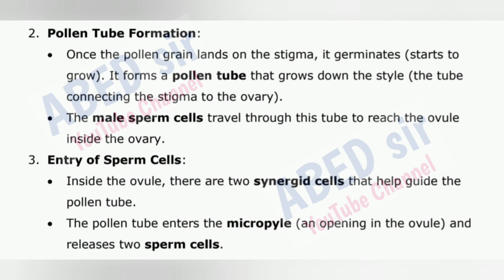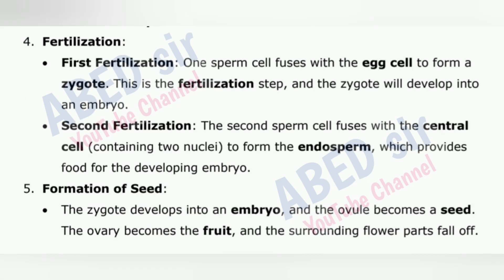3. Entry of sperm cells — inside the ovule, there are two synergid cells that help guide the pollen tube. The pollen tube enters the micropyle, an opening in the ovule, and releases two sperm cells. 4. Double fertilization — sperm cell one fuses with the egg cell to form a zygote, which will develop into an embryo. Sperm cell two fuses with the central cell, containing two nuclei, to form the endosperm, which provides food for the developing embryo.